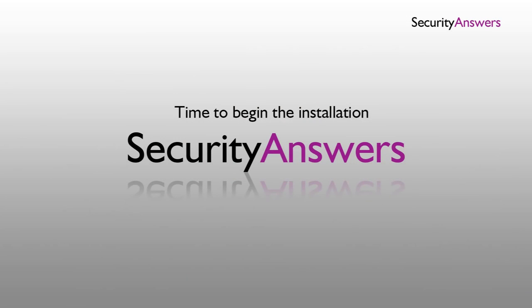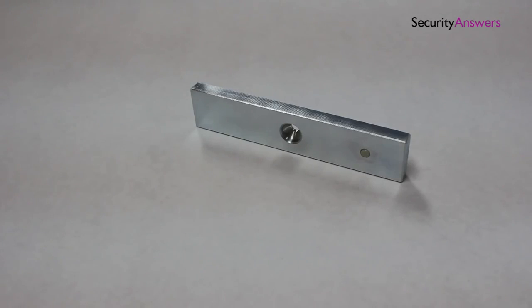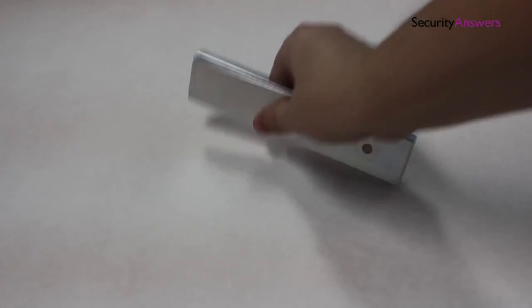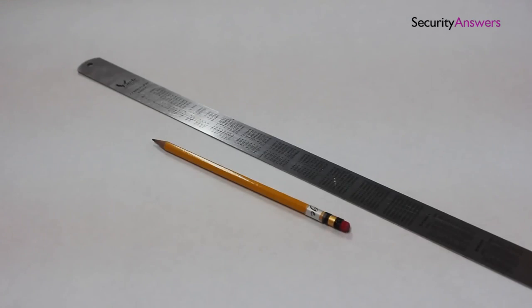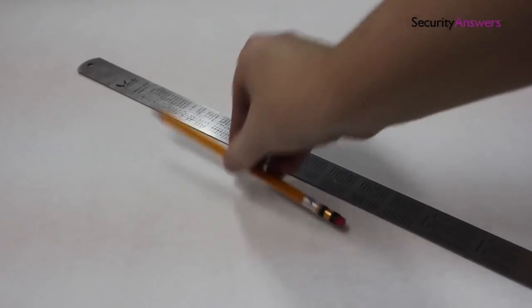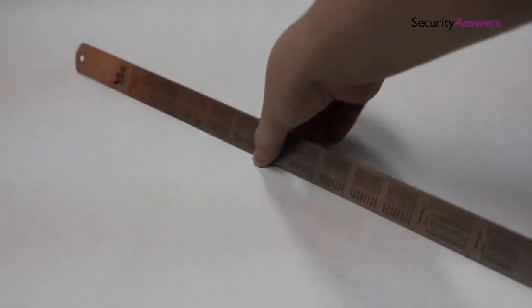Let's begin with the installation. Begin with the thinner metal piece which will be attached to the door. Before we screw this into position, we will need to mark off the correct location using the ruler and pencil.